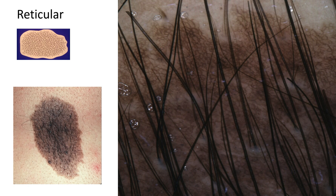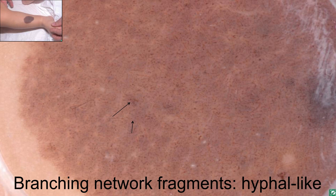The reticular pattern. Here we have a classic example of a congenital nevus. We see brown lines that form a grid-like pattern with hypopigmented holes. This is a reticular pattern — symmetric and uniform throughout the entire lesion.